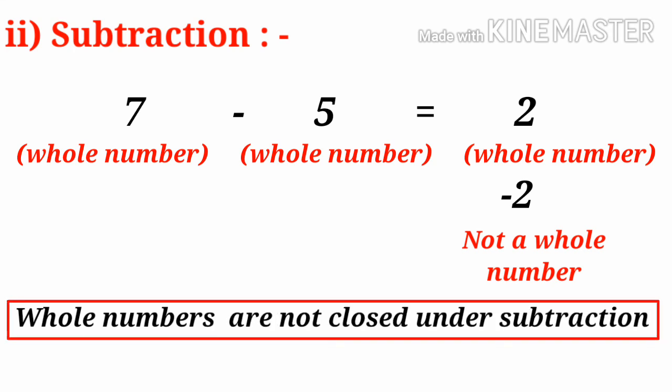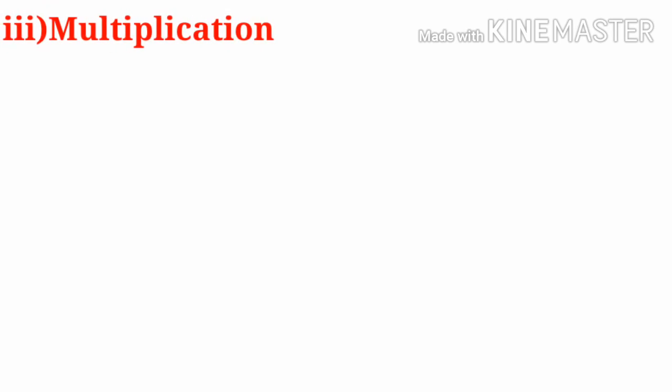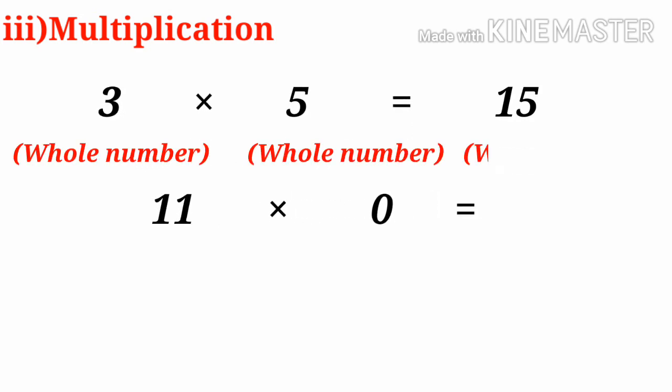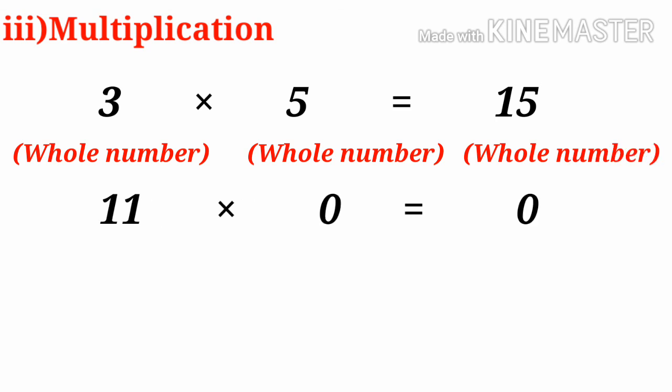Now, third, Multiplication. Take numbers 3 and 5. 3 into 5 equals 15, where 3 is a Whole Number, 5 is a Whole Number, and 15 is also a Whole Number, its family member.